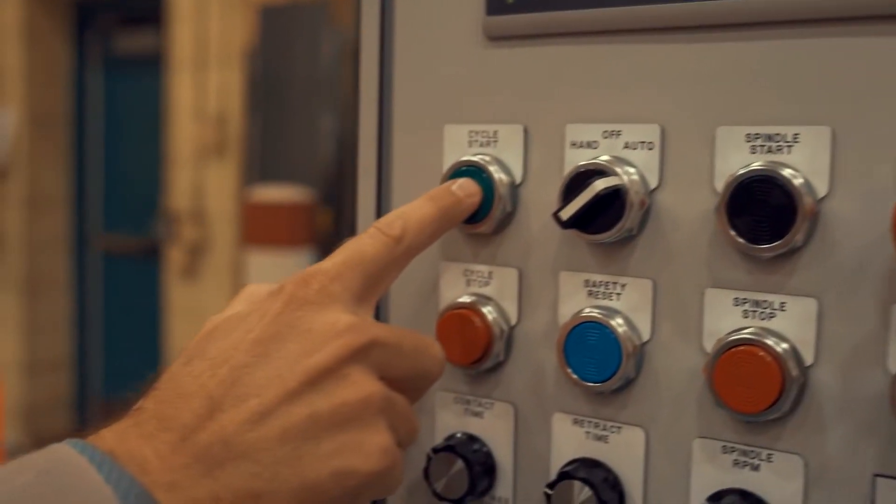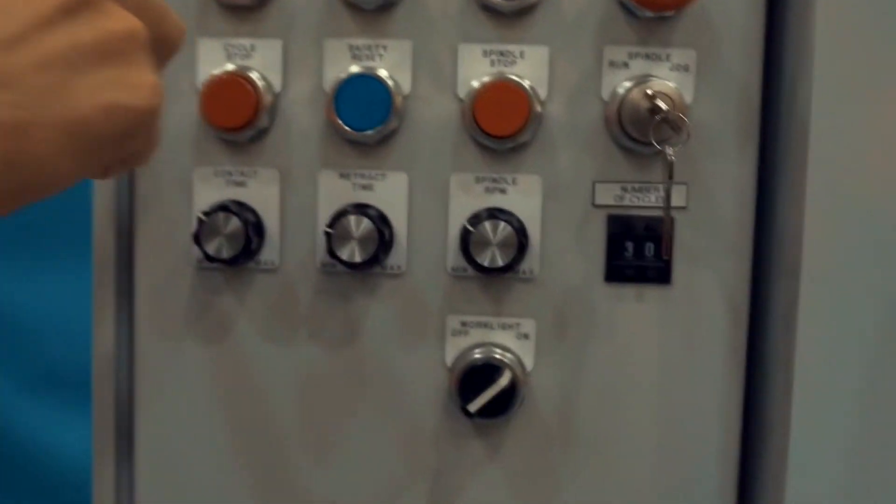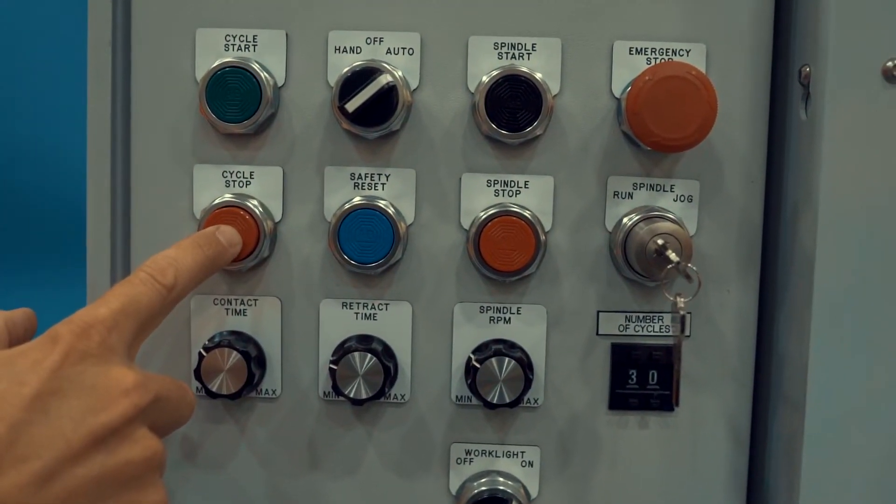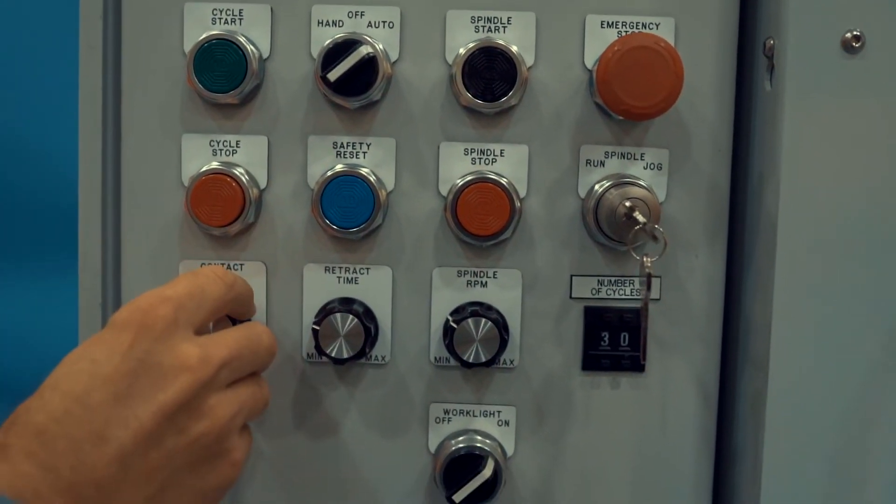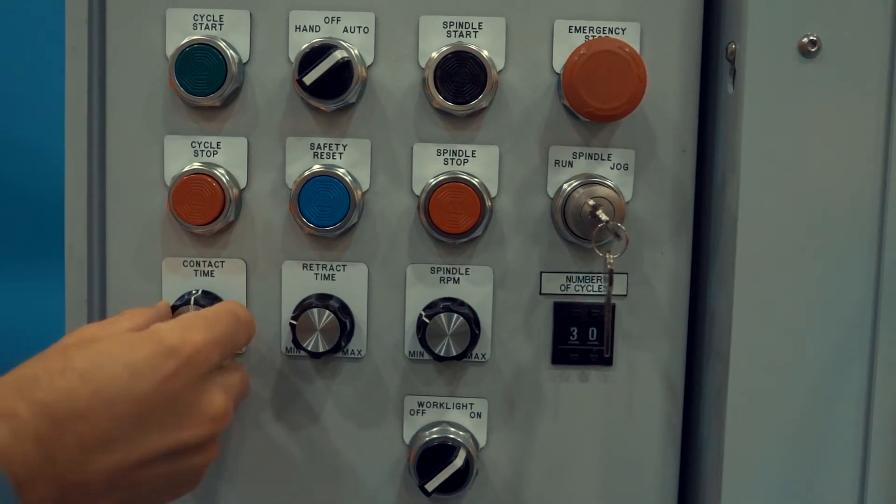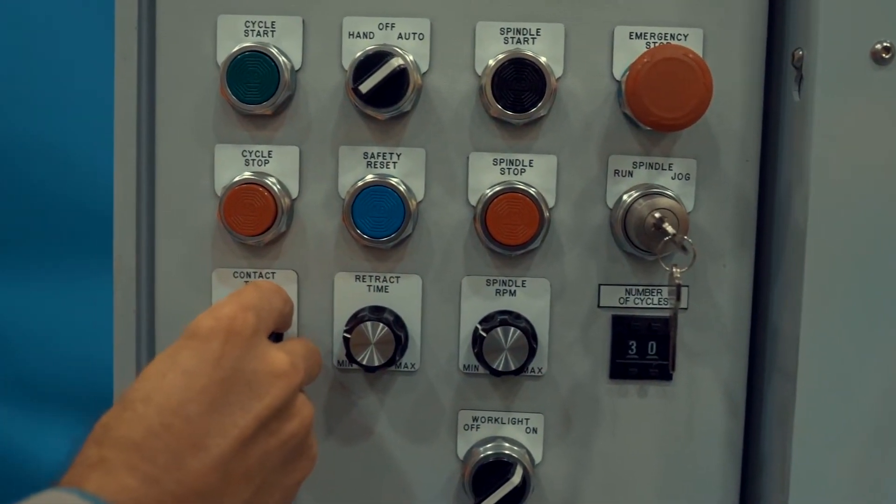Moving down to the control panel we have cycle start, cycle stop. Below that we have contact time which by changing this will reflect on the man machine interface we saw earlier.